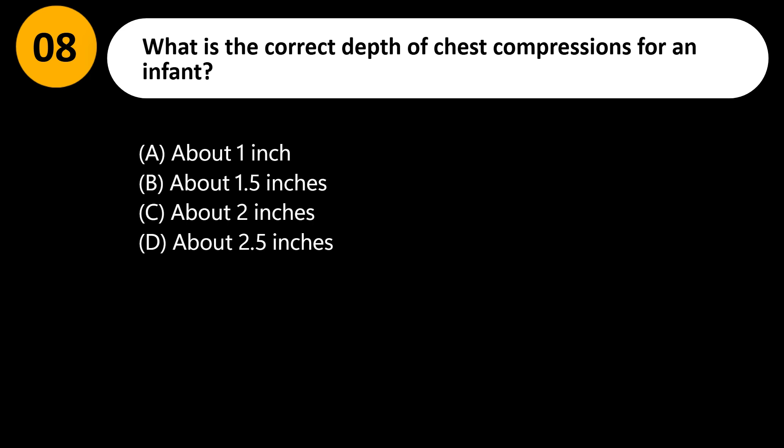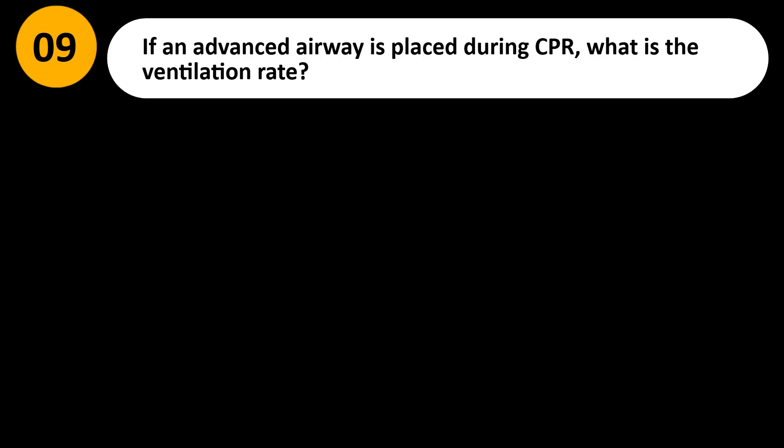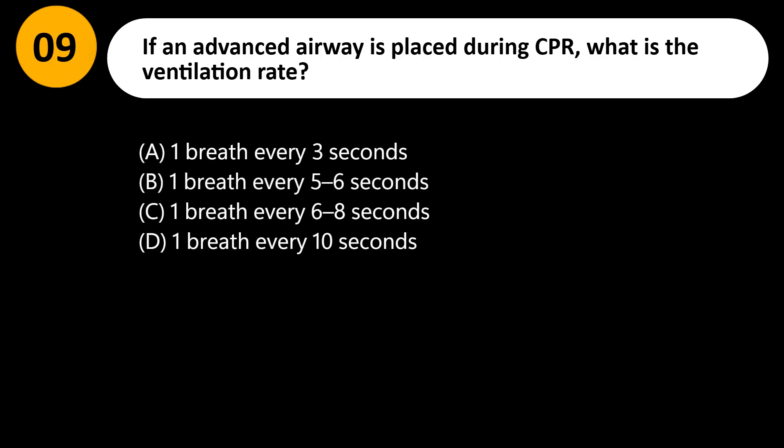What is the correct depth of chest compressions for an infant? A) About 1 inch, B) About 1.5 inches, C) About 2 inches, D) About 2.5 inches. Answer: B. Infant compressions should be about 1.5 inches, or one-third the chest's anterior-posterior diameter.